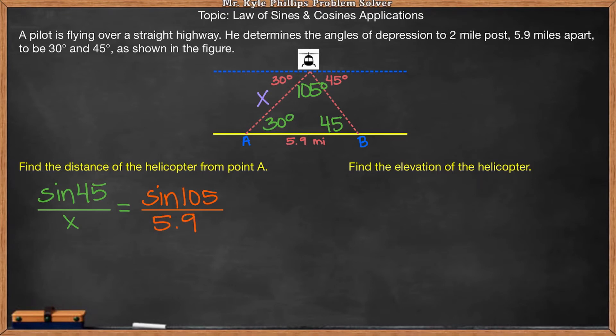So we solve law of sines equations the same way we do proportions. We cross multiply. So this will be x times sine of 105 equals 5.9 times sine of 45. Now we want the value of x. So in order to isolate the x, we need to do the opposite of the operation here. So since they're multiplying, we will divide both sides by sine of 105.